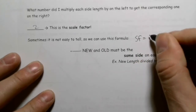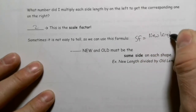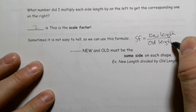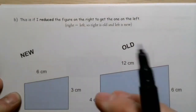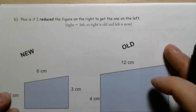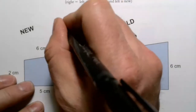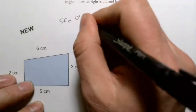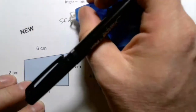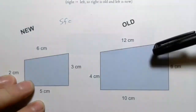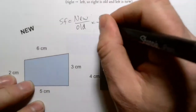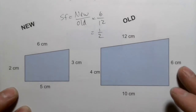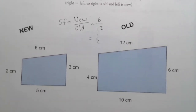The formula for scale factor is: scale factor equals new length divided by old length — as long as they're corresponding sides. Going the other direction, if the larger shape is the old one and the smaller is the new one, then new is six and old is twelve, giving a scale factor of one-half, or 0.5.